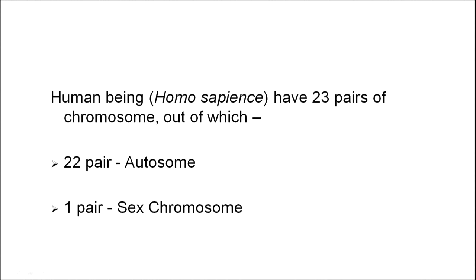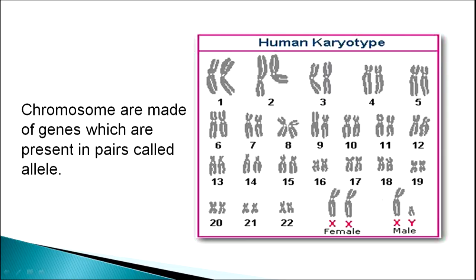Human beings, known as Homo sapiens, have 23 pairs of chromosomes. Out of these 23 pairs, 22 pairs are autosomes and one pair is known as the sex chromosome. As you see from the human karyotype, chromosomes 1 to 22 are in pairs with similar structure — both arms and similar physical structure. The 23rd chromosome in females is similar, that is XX, while in males it is different — XY.